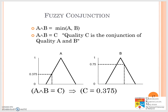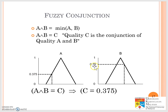Now, if it's an AND conjunction, we take the minimum. Using the same example — A is 0.375 and B is 0.75 — because it's AND we take the minimum, so C value is 0.375.